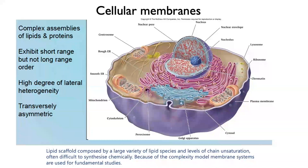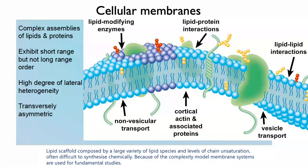Cellular membranes surround all cells and also organelles within cells. They are rather complex assemblies composed of lipids, proteins, sterols, and a huge variety of molecules. In terms of lipids, there is a huge variety of different lipids composing membranes. They have short-range order and a high degree of lateral heterogeneity — different composition on the leaflets of the membrane as well as formation of domains within membranes.